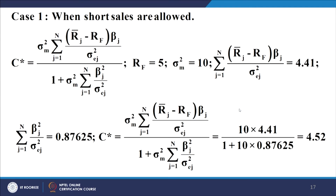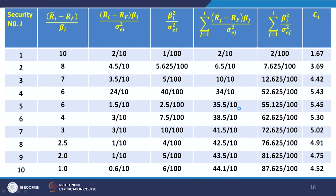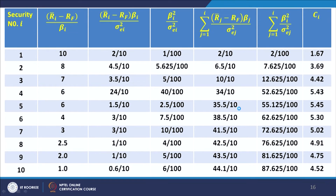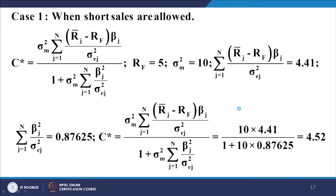The inputs required for C* include σ_m² = 10, R_f = 5, and Σ(R_i − R_f)β_i/σ_{ei}², which from the table equals 44.1/10 = 4.41. We also need Σ β_i²/σ_{ei}², which from the table equals 87.625/100 = 0.87625. With all inputs available, we find that C* = 4.52.